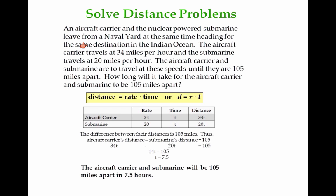Solve distance problems. Let's take a look at this example. An aircraft carrier and nuclear power submarine leave from a naval yard at the same time, heading for the same destination in the Indian Ocean. The aircraft carrier travels at 34 miles per hour and the submarine travels at 20 miles per hour. The aircraft carrier and submarine travel at these speeds until they are 105 miles apart.